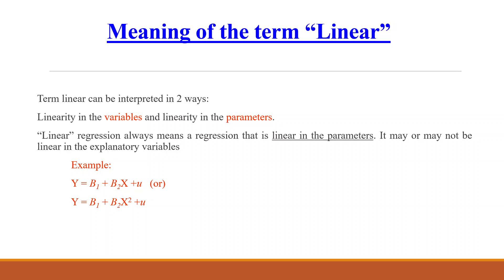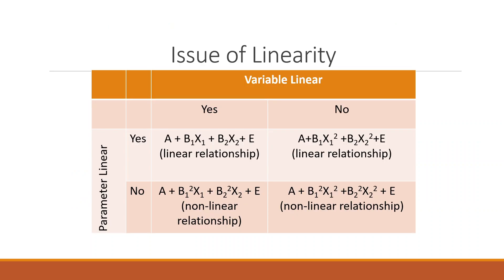We will always be dealing with linear equations or linear regression in our analysis. Linearity can be interpreted in two ways: linearity in the variable and linearity in the parameter. Linear regression always means a regression that is linear in the parameters. For example, a + b1*x1 + b2*x2 + error term is linear in variables. When variables are x1-squared or x2-squared, this is also considered linear. Non-linear parameters would be b1-squared or b2-squared — those are non-linear relations.